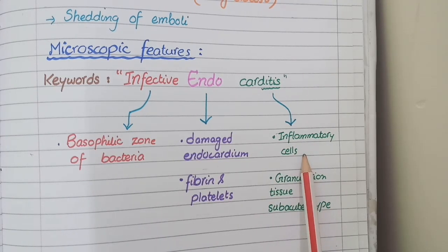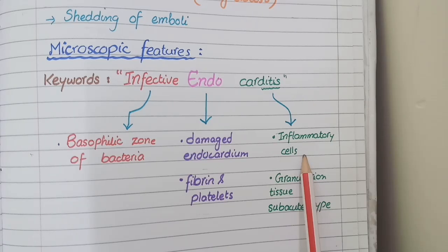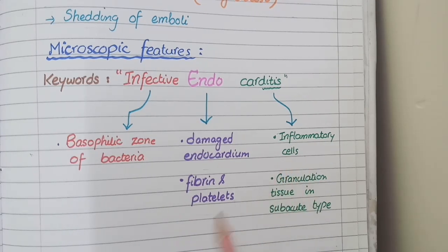There are two types of infective endocarditis: acute and sub-acute. In acute infective endocarditis, the inflammatory cells will be neutrophils. In sub-acute infective endocarditis, the inflammatory cells will be a mixture of neutrophils, lymphocytes, and macrophages. Additionally, in sub-acute infective endocarditis, you will also see granulation tissue.